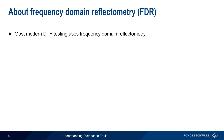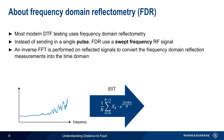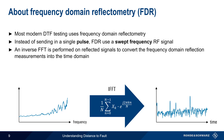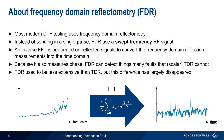Most modern DTF implementations therefore use frequency domain reflectometry. Instead of sending in a single pulse, FDR uses a swept frequency RF signal. The reflections are measured in the frequency domain, and then an inverse FFT, or Fast Fourier Transform, is performed on the reflected signals to convert this frequency domain measurement into a time domain measurement, showing return loss or VSWR as a function of time. Because FDR measures both magnitude and phase, it's more sensitive than TDR and can detect many faults which TDR could not. FDR is now the standard way of implementing distance to fault measurements in portable or field-use VNAs.